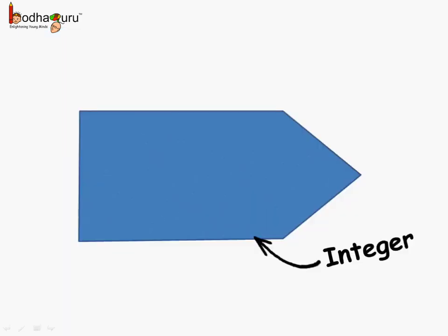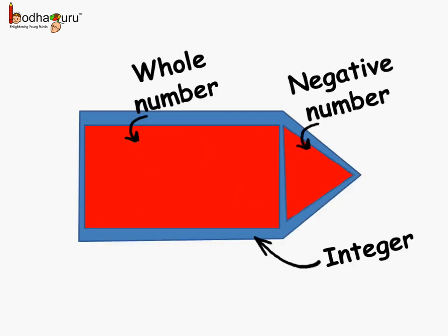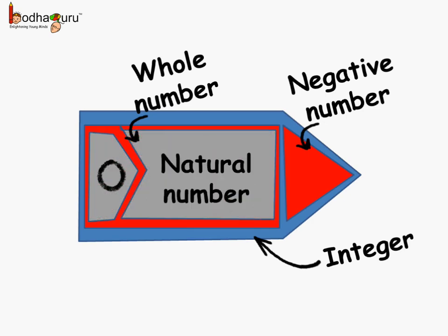What are integers? Integer is a collection of whole numbers and negative numbers, where whole numbers consist of 0 and natural numbers or the counting numbers.